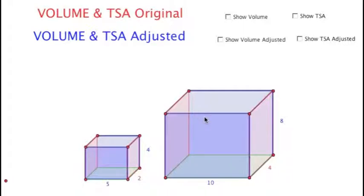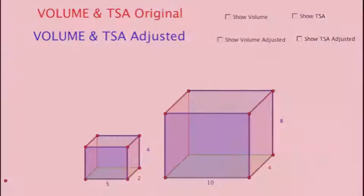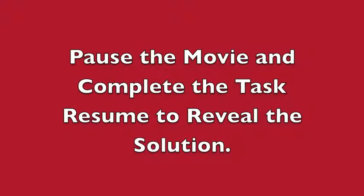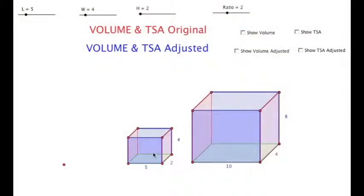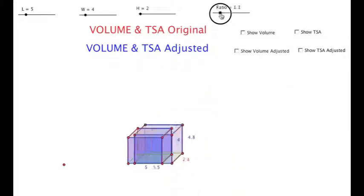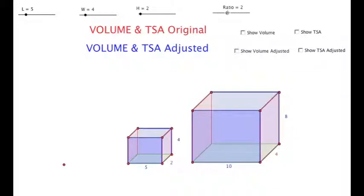We have two rectangular solids. The first box is 2 by 4 by 5, and we've doubled all of those measurements and created this larger box by doubling each of the original measurements. So the first task was to look at the relationship between the volumes when each measurement is doubled.